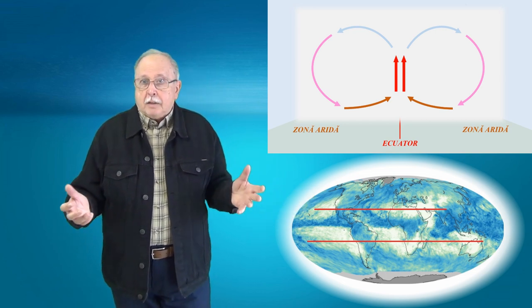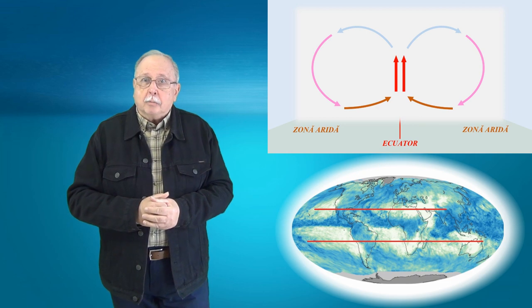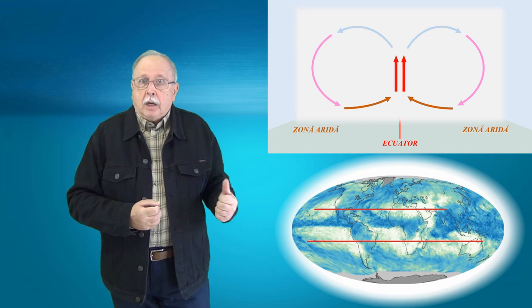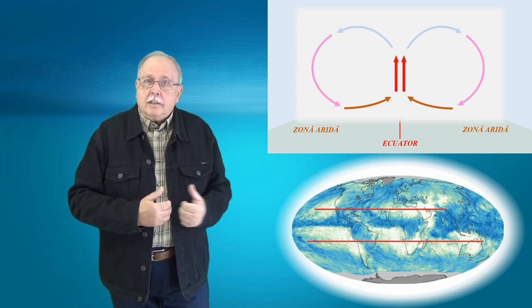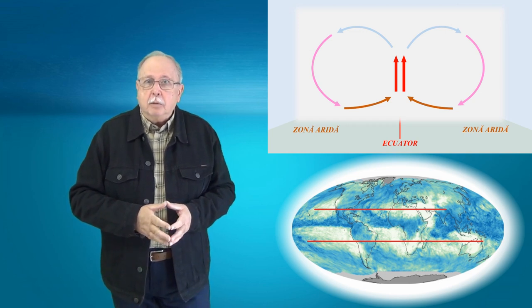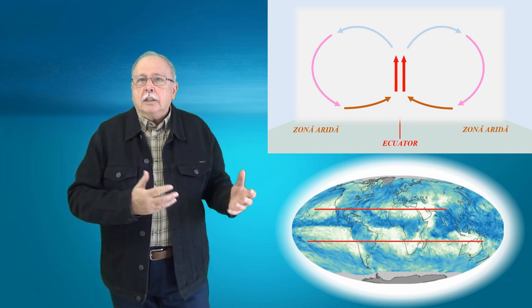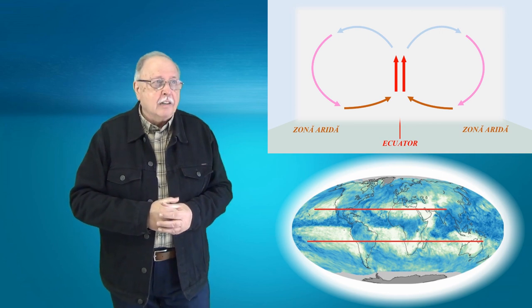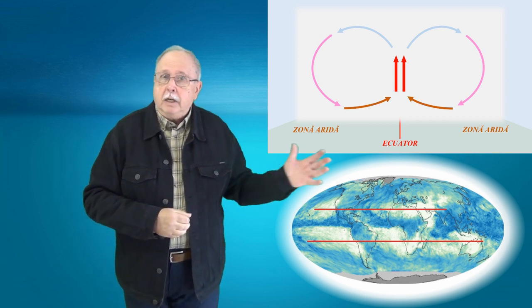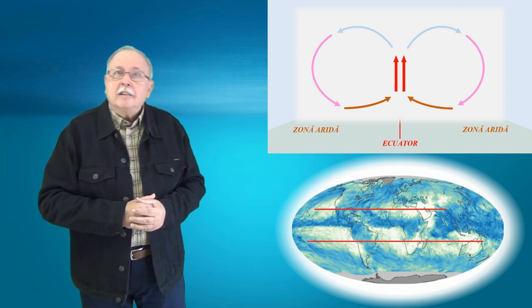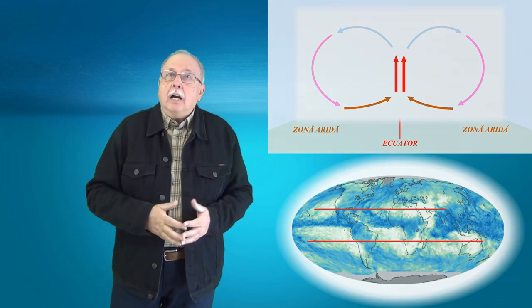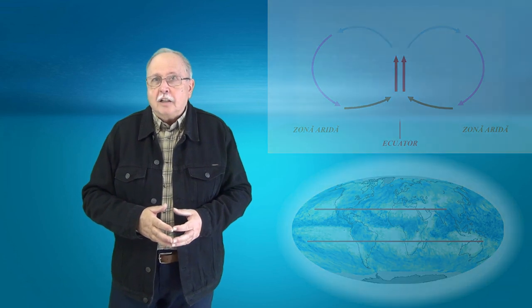Sigur că nu avem o simetrie perfectă și de asemenea nu toată suprafața de la aceste latitudini este săracă în ploi, pentru că în afară de curenții de aer și de umiditatea aerului mai sunt și alți factori care contribuie. De pildă, cantitatea de vegetație din zonă, aria suprafeței acoperită de apă și altele. Dar după cum vedeți pe hartă, simetria este totuși ușor de observat. Se pare că a fost o întrebare grea, am primit foarte puține răspunsuri.